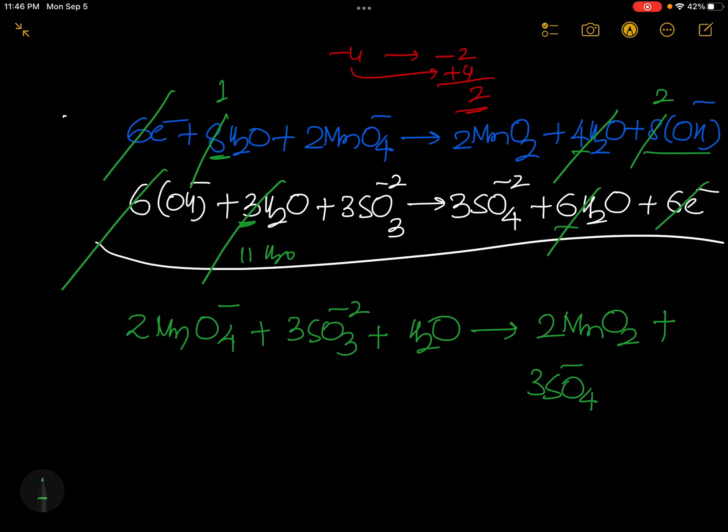That's it. 2 MnO4 minus plus 3 SO3 minus 2 plus water gives rise to 2 MnO2 plus 3 SO4 minus 2 plus 2 OH minus. You can check here, 3 times minus 6 and minus 2, total charge is minus 8 this side. 2 times minus 2 and 3 times minus 6, total charge is minus 8 this side. It is a balanced equation. This is your answer.